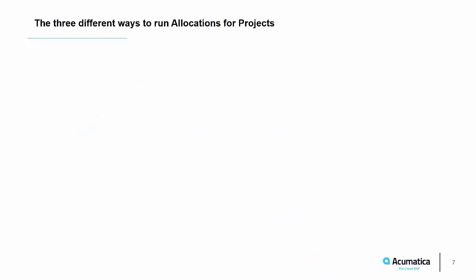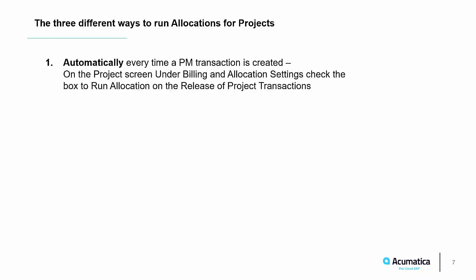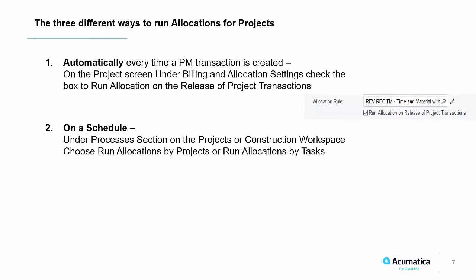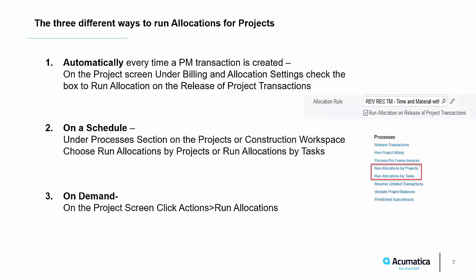There are three different ways to run allocations for projects. Automatically — every time a project transaction is created, on the project screen under billing and allocation settings, check the box to run allocation on the release of project transactions. You can also do it on a schedule: under the processes section on the projects or construction workspace, choose run allocations by projects or run allocation by tasks. You can also run it on demand — just from the project screen itself, click actions and run allocation.